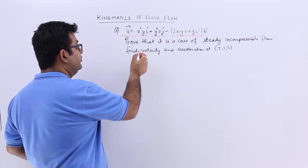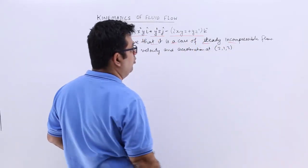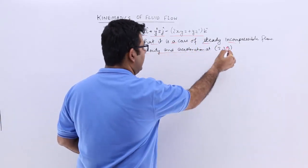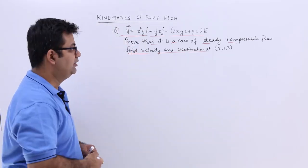We have to prove that this is a case of steady incompressible flow and we have to find the velocity and acceleration at the 2,1,3 point.